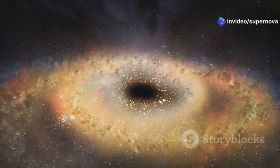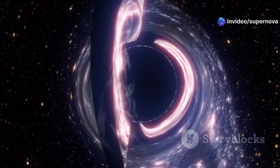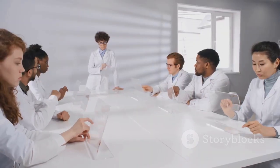JWST has also detected supermassive black holes at the centers of these early galaxies. These black holes are billions of times more massive than our sun. How they formed so quickly remains a mystery.